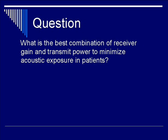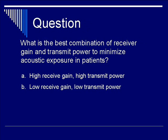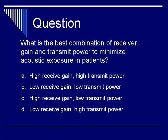Let's do a question. What is the best combination of receiver gain and transmit power to minimize acoustic exposure in patients? The four options are: A — high receiver gain, high transmit power; B — low receiver gain, low transmit power; C — high receive gain, low transmit power; or D — low receive gain, high transmit power. The correct response is C, high receive gain with low transmit power. This combination optimizes the image while minimizing acoustic exposure for the patient.